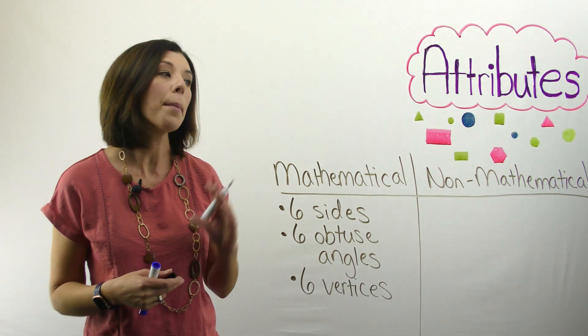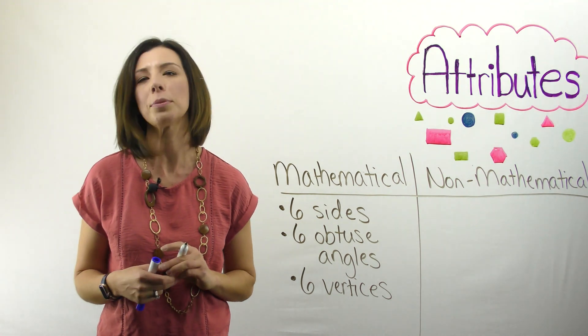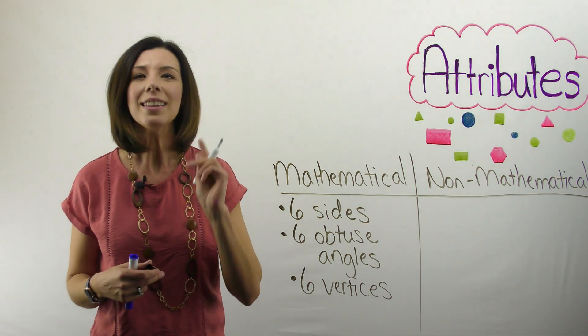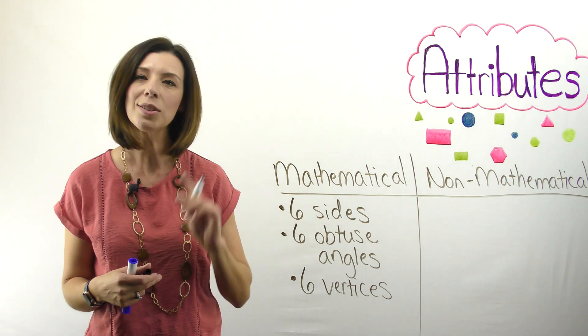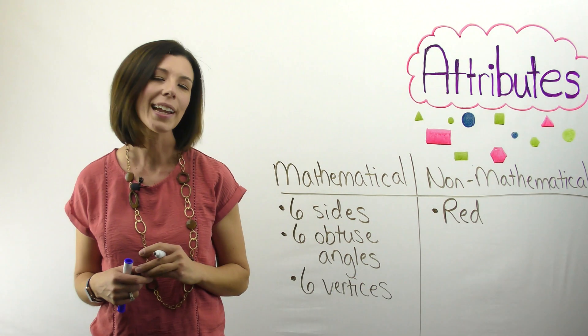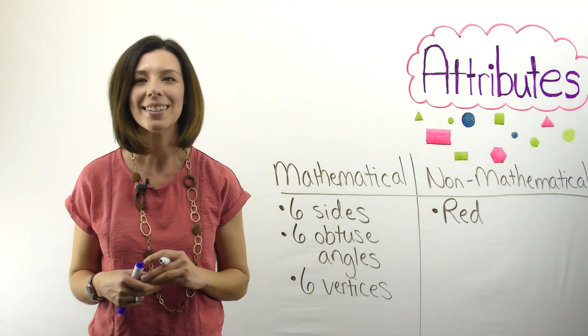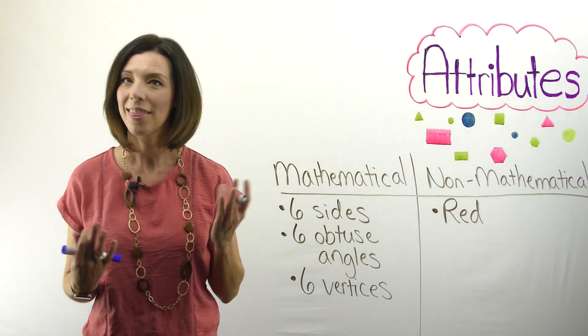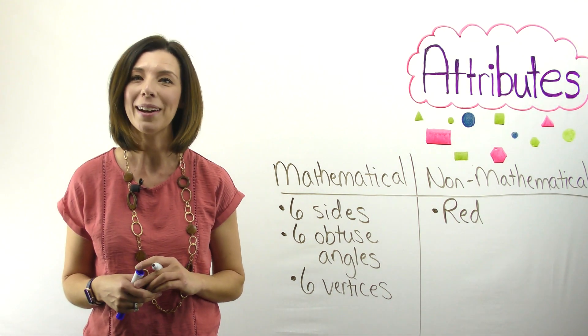Now, let's think of some non-mathematical attributes. How about color? This is a thin red hexagon, so red would be a non-mathematical attribute. Can you think of another one? Let me give you a hint. When I say thin, that would be a non-mathematical attribute.